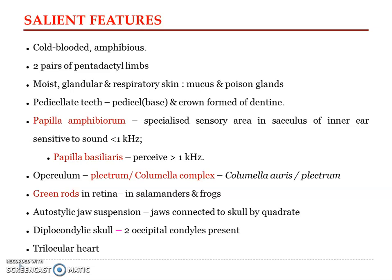The next feature is autostylic jaw suspension. The hyomandibular part of the hyoid arch has been transformed into the columella auris, and the jaws became connected to the skull through the quadrate. In autostylic jaw suspension, the lower jaw articulates with the skull via the quadrate bone. This same condition is also found in reptiles and birds.